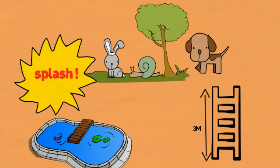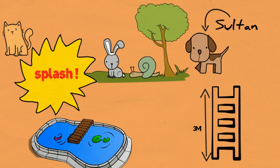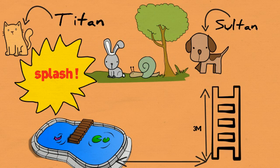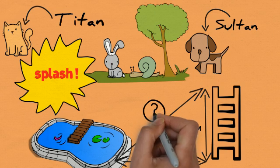Her garden is small and she also shares it with Sultan, her dog, and Titan, her cat, so the slide cannot take too much space. Rebecca has decided that her slide will be 4 metres from the pool.